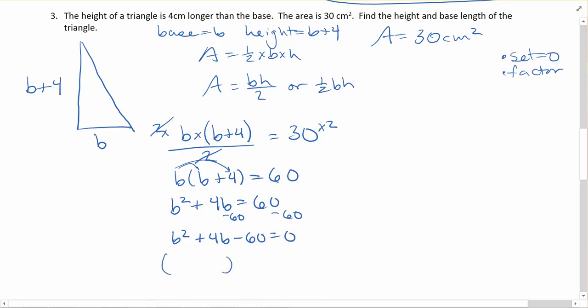And now I can factor. So let's think about what's going to times to negative 60 and add to positive four. If you're not sure, just start thinking about factors of 60: 1 and 60, 2 and 30, 4 and 15, 6 and 10. I'm just looking for any combination that has a difference between them of four because that's the middle term. Here I've got a difference of four.